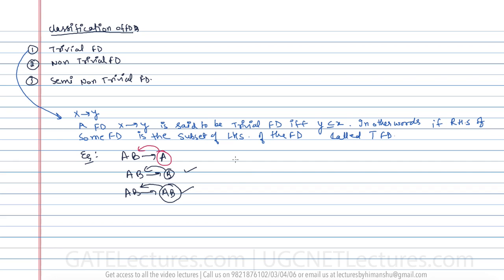If AB determines C, it is not a trivial functional dependency because the right-hand side is not a subset of the left-hand side. If AB determines AC, again it is not a trivial functional dependency because the right-hand side is not purely a subset of the left-hand side.